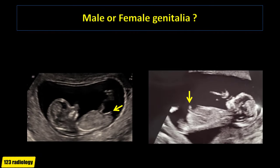Look at these two images. On the image on the right side of the screen, the genital tubercle is directed caudally, denoting female fetus. On the image on the left side of the screen, the genital tubercle is directed anteriorly, denoting male fetus.